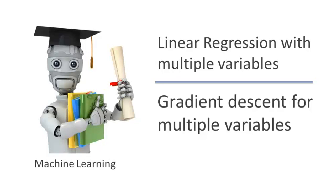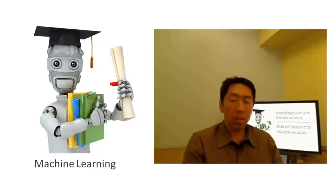In the previous video, we talked about the form of the hypothesis for linear regression with multiple features, with multiple variables. In this video, let's talk about how to fit the parameters of that hypothesis. In particular, let's talk about how to use gradient descent for linear regression with multiple features.